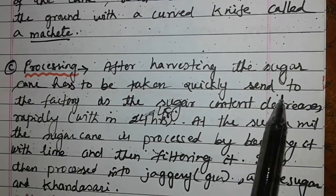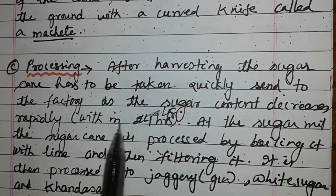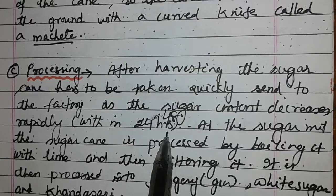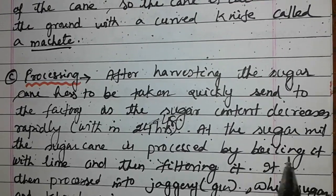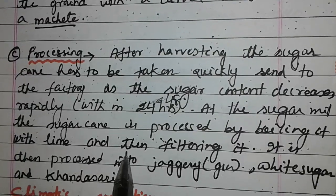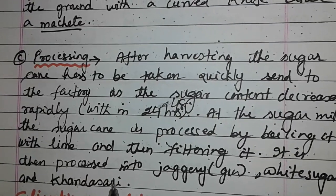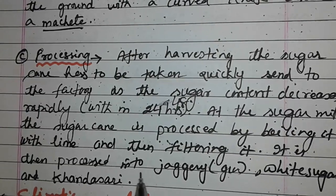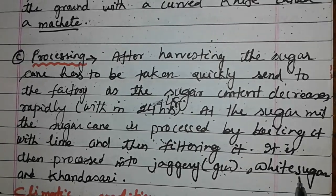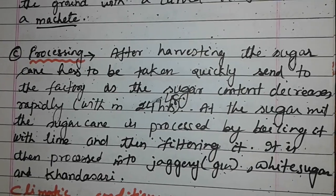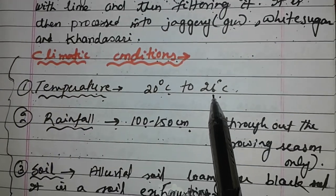After harvesting, the sugarcane has to be quickly sent to the factory as the sugar content decreases rapidly within 24 to 48 hours. At the sugar mill, the sugarcane is processed by boiling it with lime and then filtering it. This is the process of preparing jaggery or gur, white sugar, and khandsari.